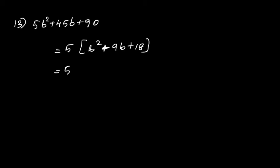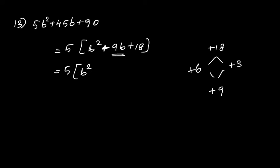Multiply the coefficient of b² and the numerical value 18 to get +18, and we need +9. The two numbers are +6 and +3. Replace 9b by 6b and 3b, so we get b²+6b+3b+18.